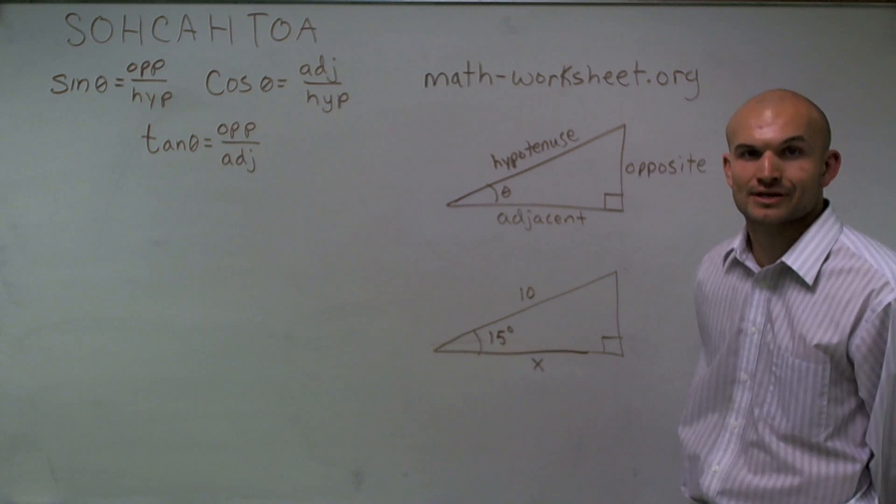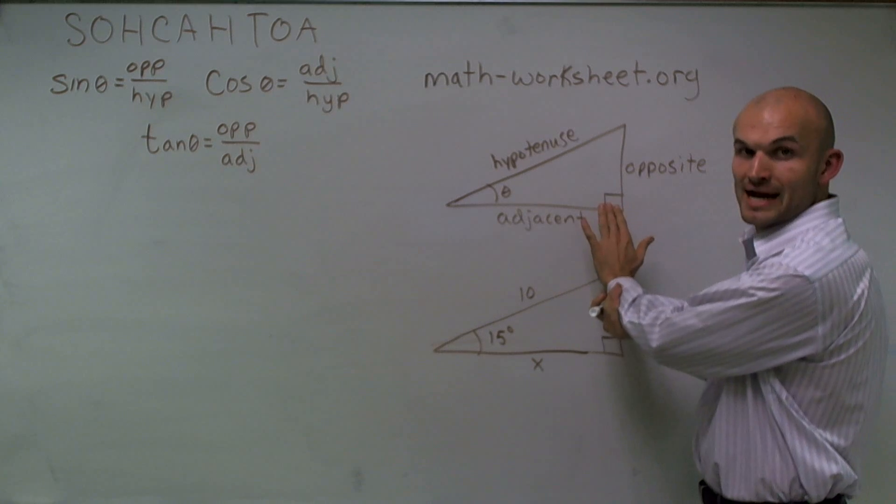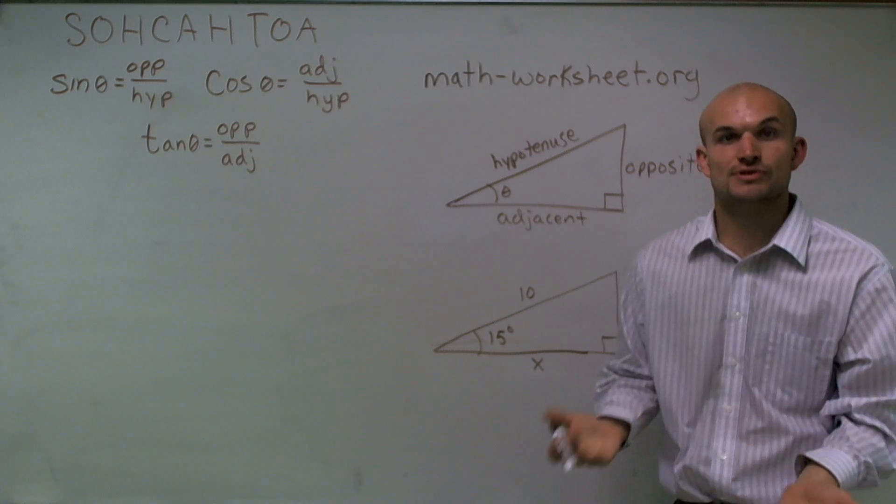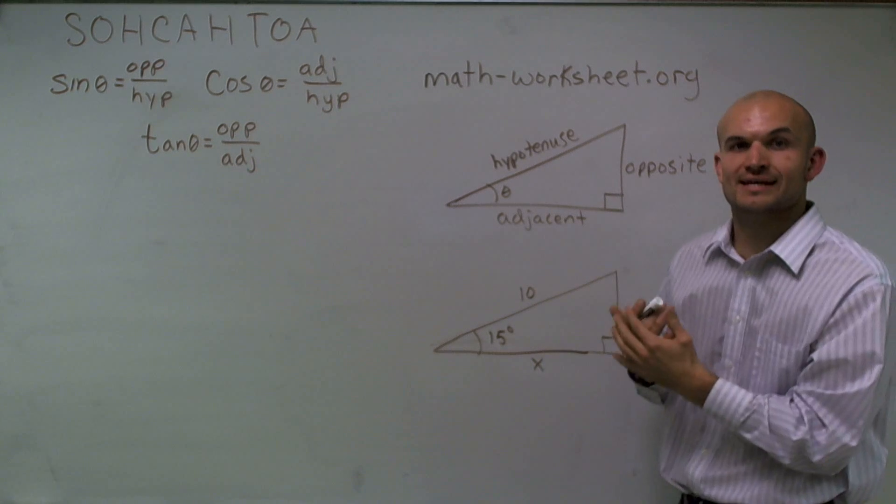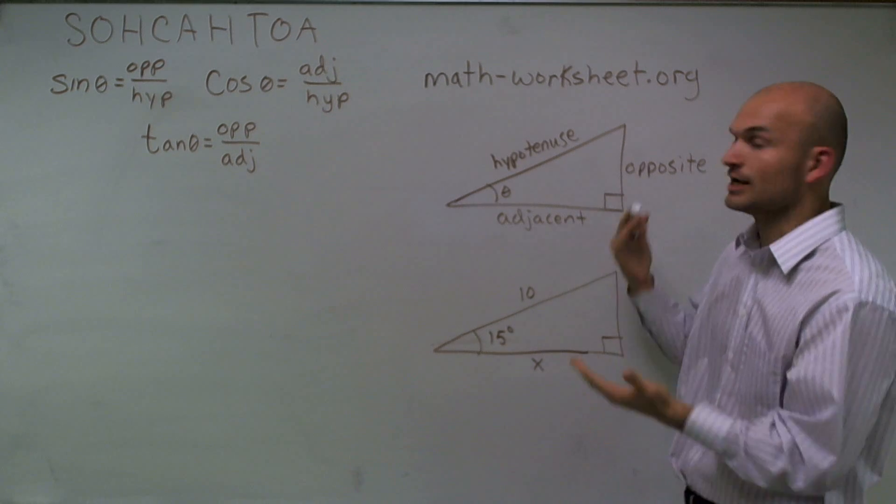Now, if we have an angle besides our 90-degree angle, we call that angle usually theta. And theta is going to help us determine which side lengths, which of our legs are adjacent and our opposite side.